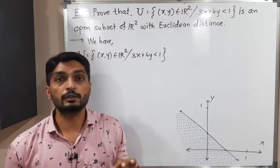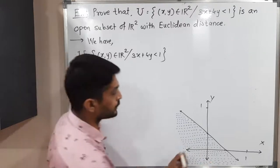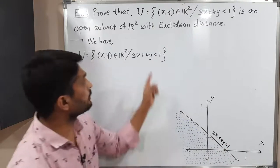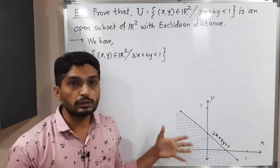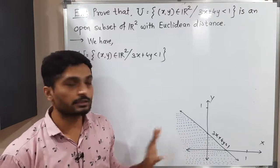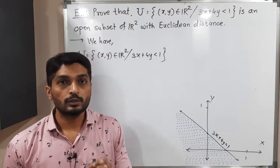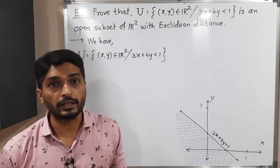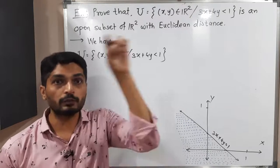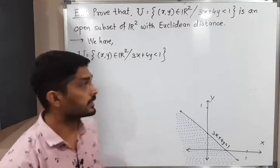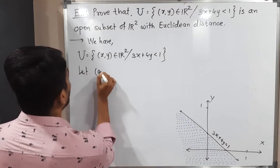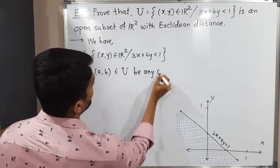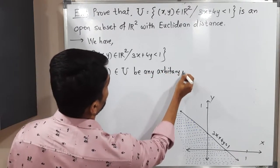In the diagram I have already shown the line 3x + 4y = 1. But they have mentioned it is less than 1, which means the region that lies on one side of this line — that region is also shown. Now we have to prove that U is an open set. We take any arbitrary point and find a ball around it which lies entirely inside the set. Let (a, b) ∈ U be any arbitrary point.